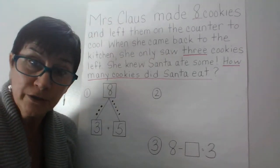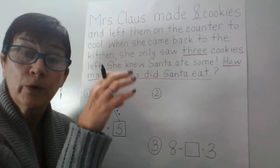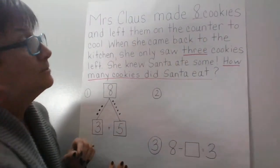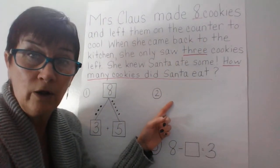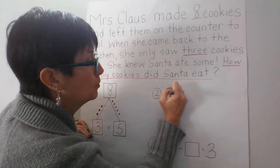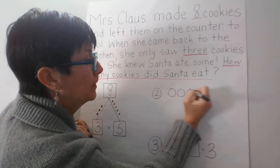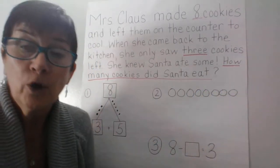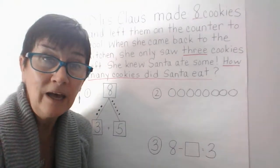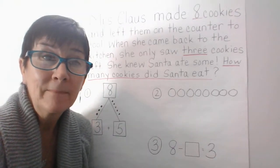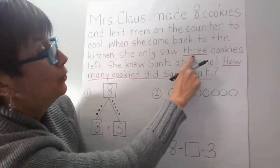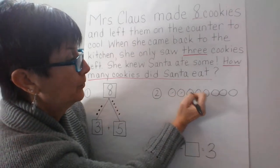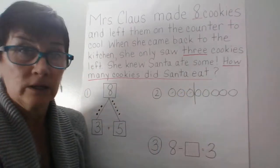Now we're going to do another strategy where we use our circles and our break-apart lines and cross-out lines. Because Mrs. Claus made eight cookies, how many circles do we draw here? Very good, we draw eight circles: one, two, three, four, five, six, seven, eight. Now how do we know where our break-apart line goes? We count over three cookies that are left: one, two, three. And we draw our break-apart line.